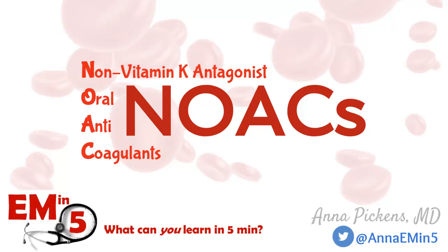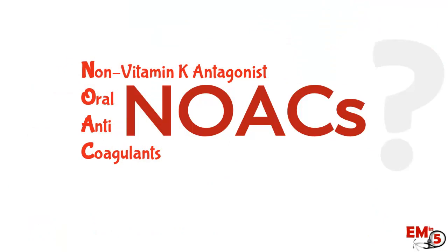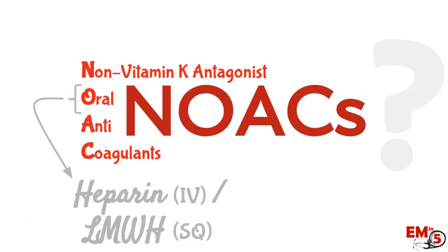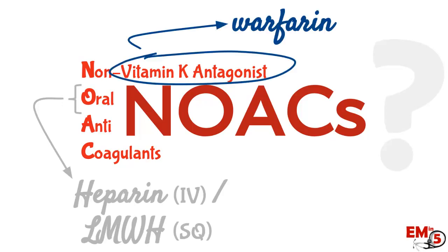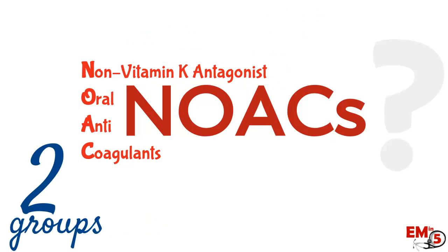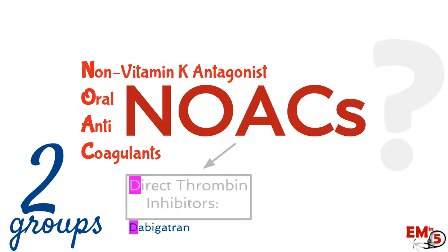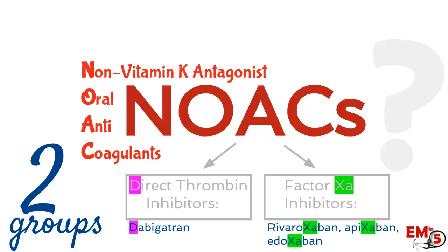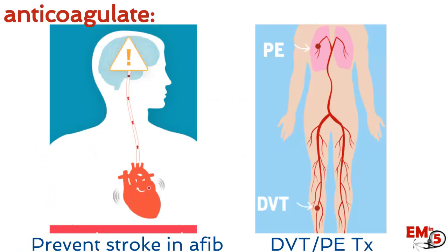This week we're going to talk about NOACs, which are non-vitamin K agonist oral anticoagulants. Basically these are oral anticoagulants — as opposed to heparin or low molecular weight heparin — that are an alternative option to warfarin or coumadin. There are two groups: the direct thrombin inhibitors, so that's dabigatran, and the factor Xa inhibitors, so that's rivaroxaban, apixaban, and edoxaban. We use them to anticoagulate all the same things we would use warfarin or heparin for: to prevent stroke in AFib, and to treat DVT and PE.